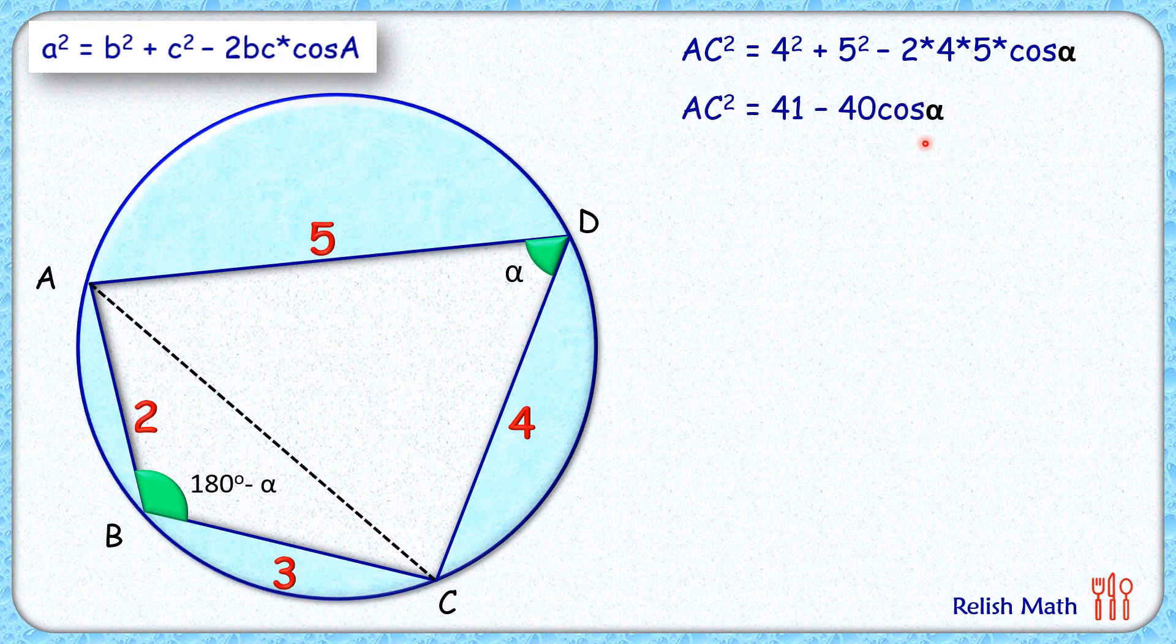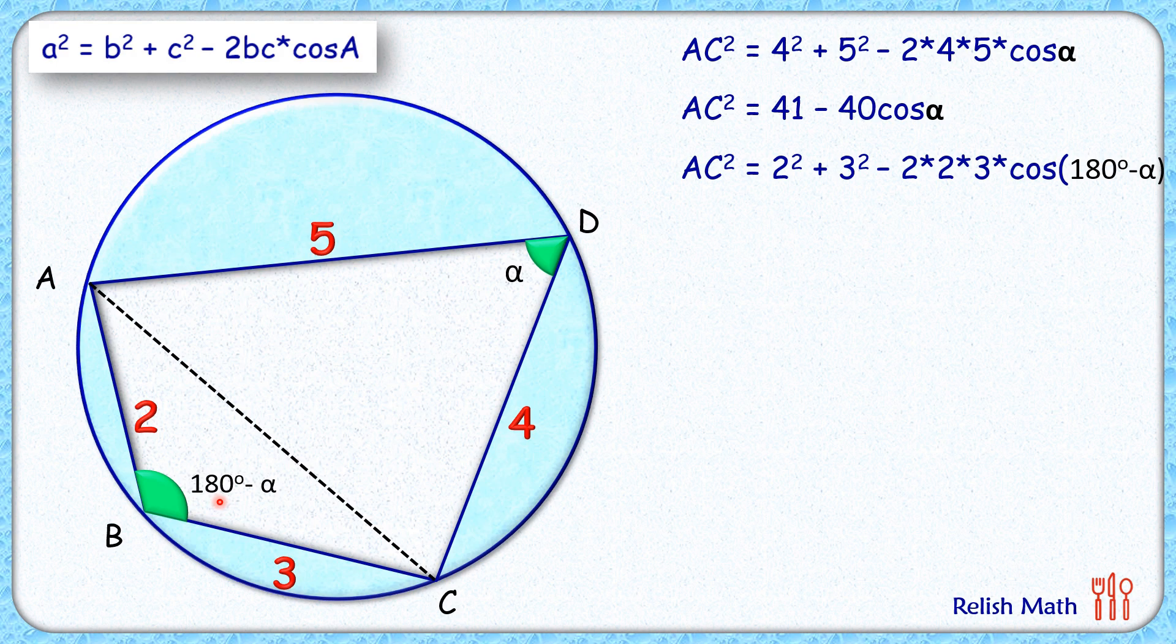Same cosine rule we'll apply in triangle ABC. So here we'll have AC squared is 2 squared plus 3 squared minus 2 times 2 times 3 times cos of angle B, or 180 minus alpha.